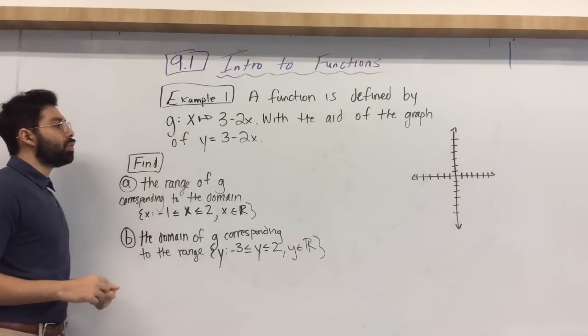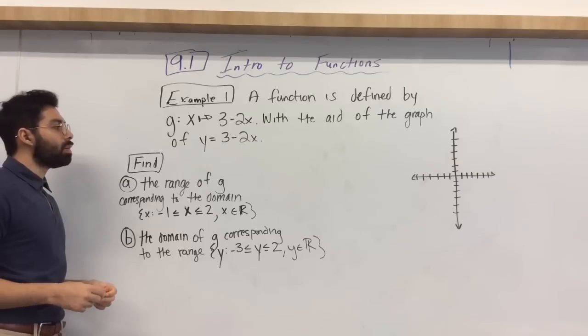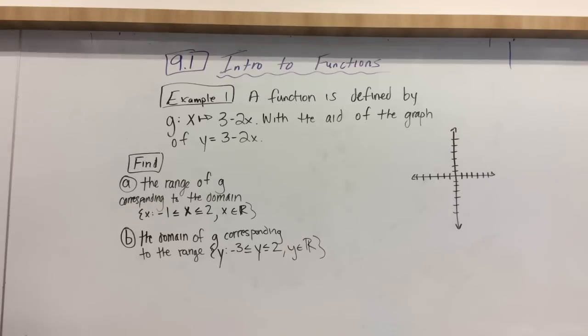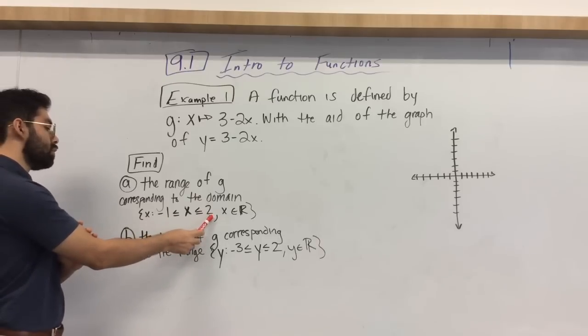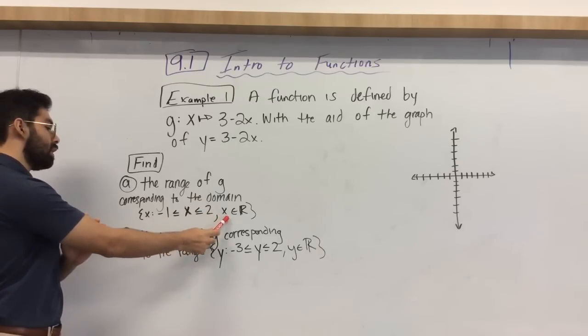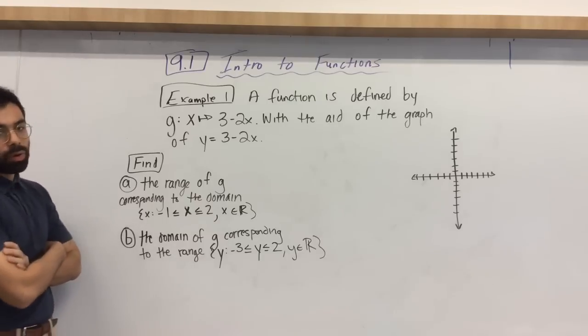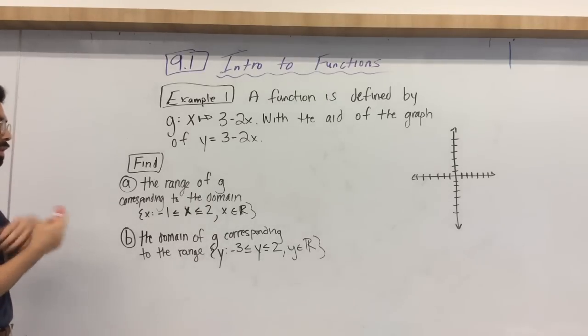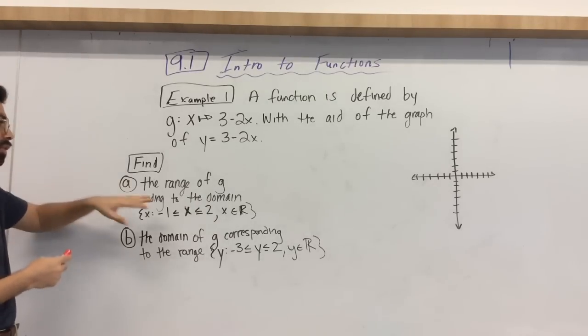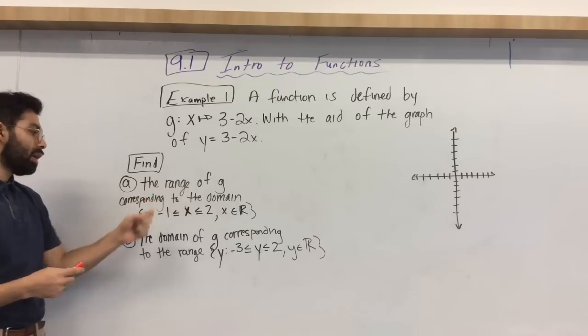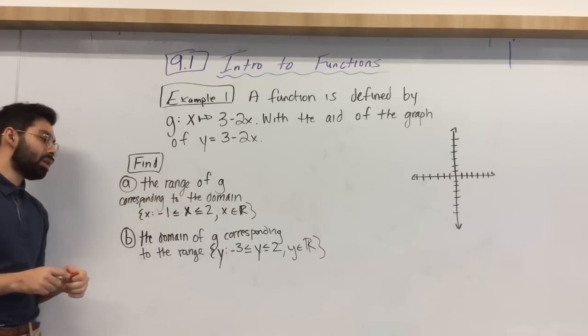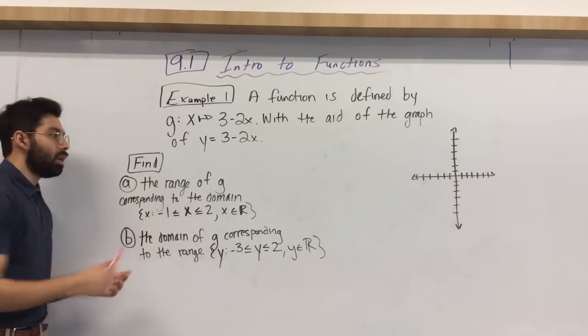Defined by g, where x is mapped to 3 minus 2x, would be the graph of y, which is equal to 3 minus 2x. There's two parts of this problem. Let's look at the first part. So range of g, which corresponds to the domain, which is between negative 1 and 2. Negative 1 and 2, it contains where x is an element of all of the numbers. Okay? So let's think about the question first.